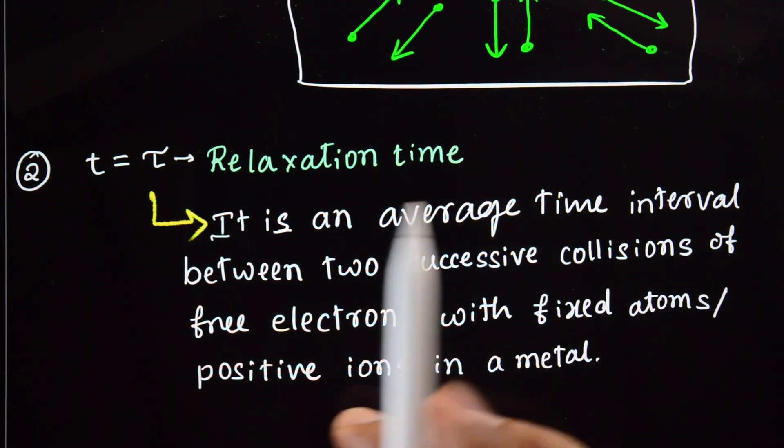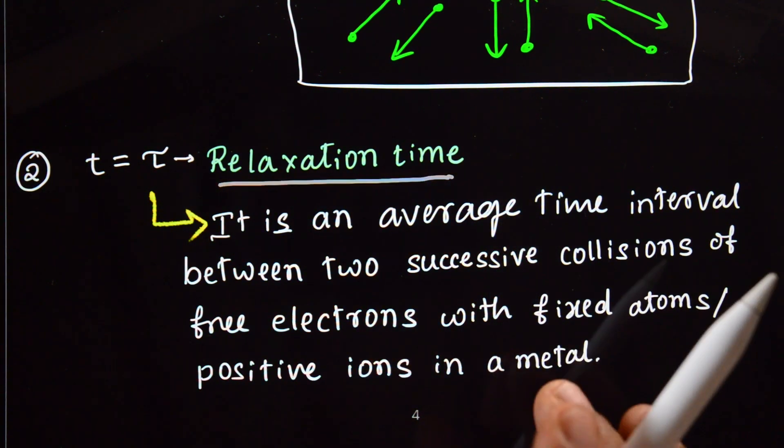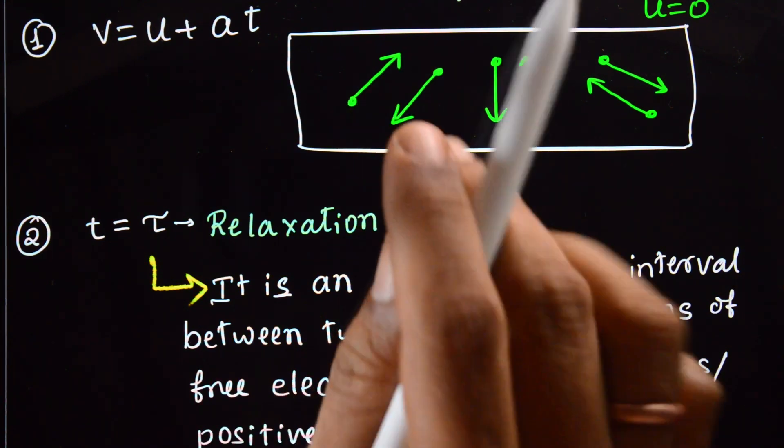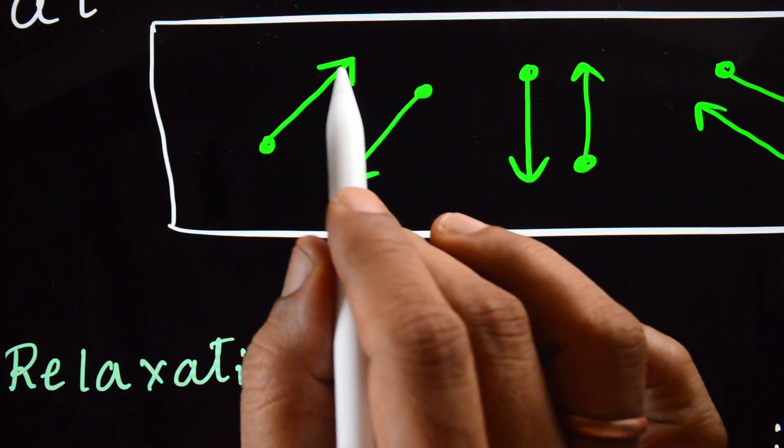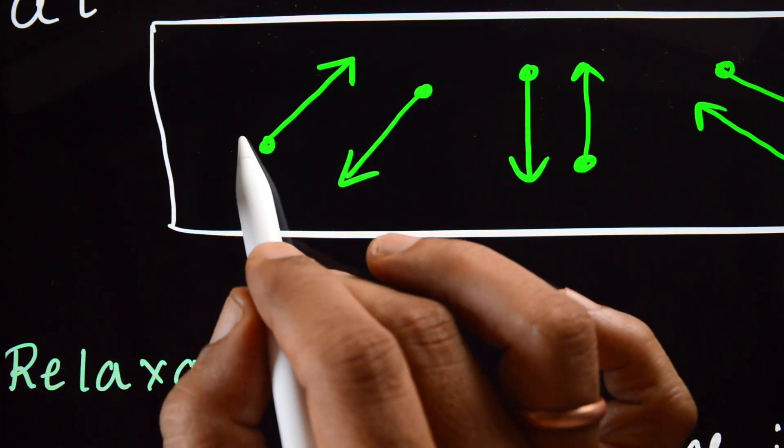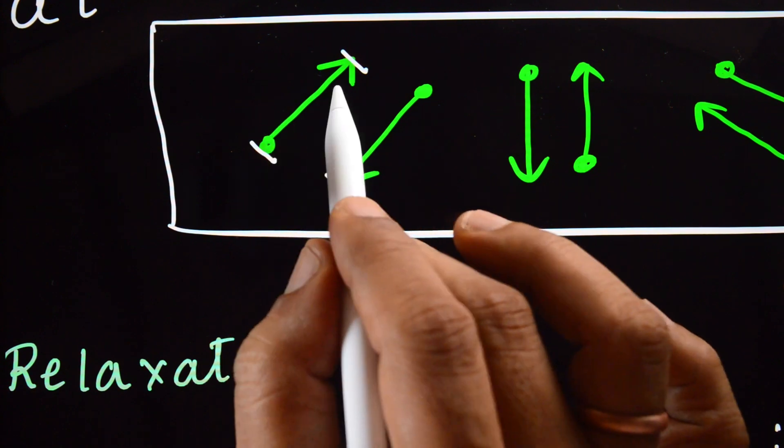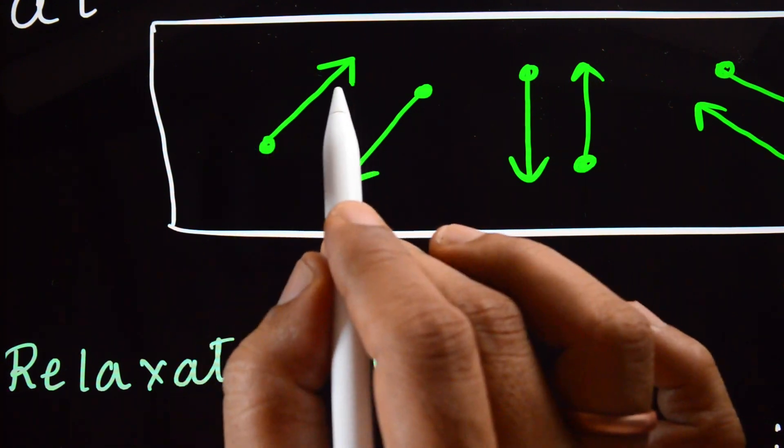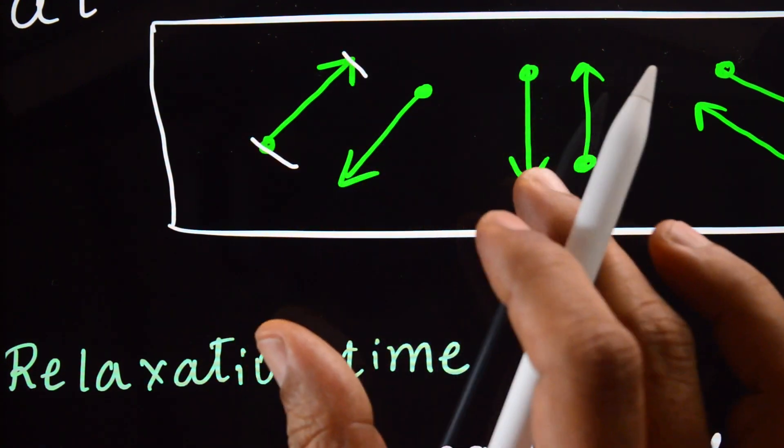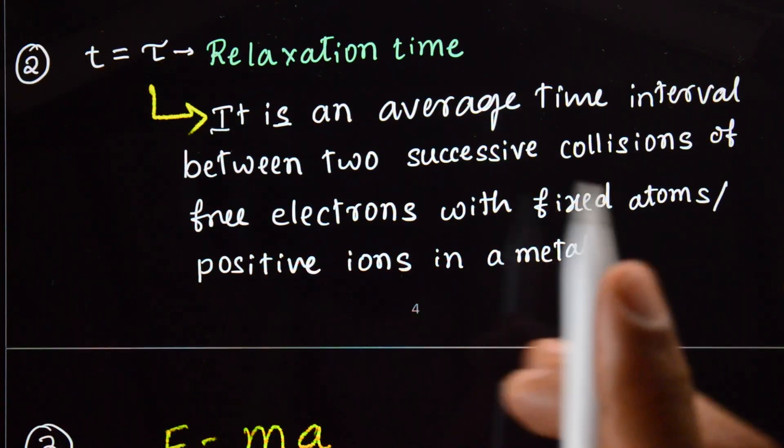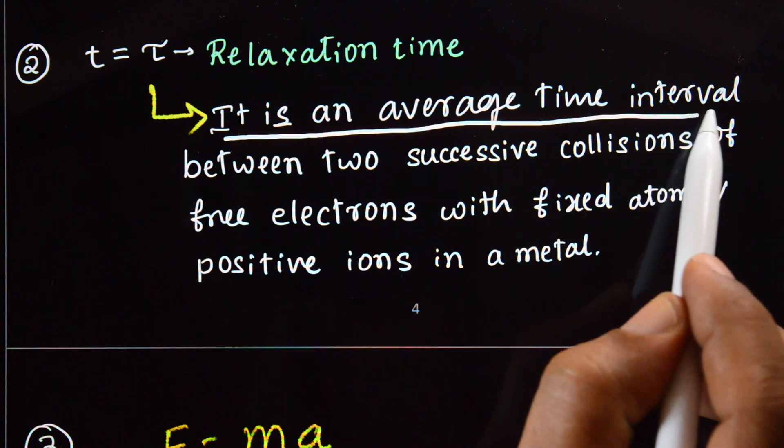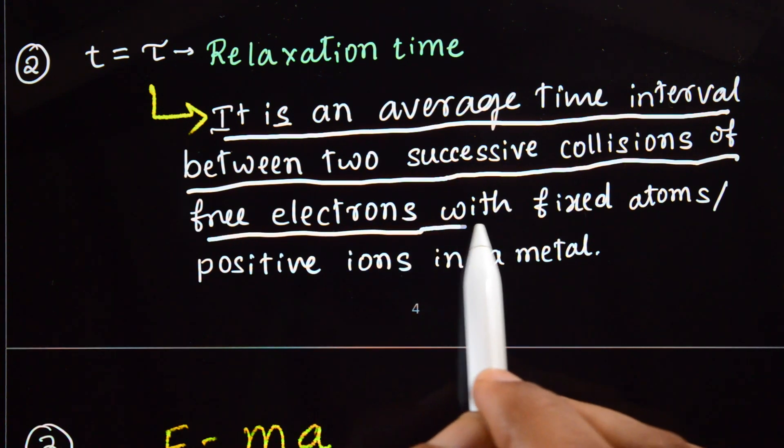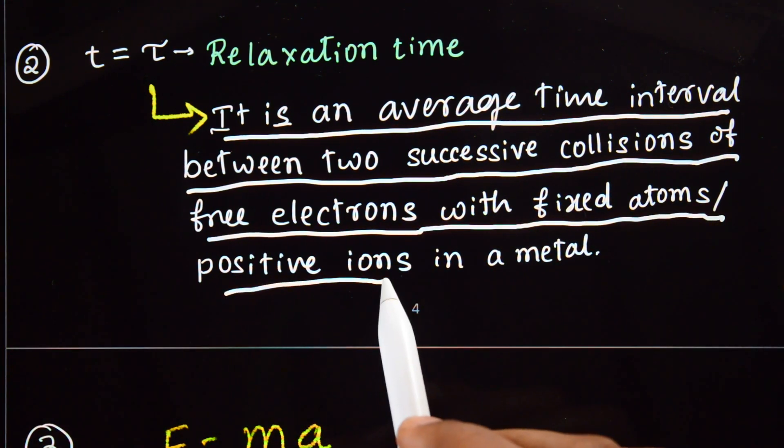Next, relaxation time. You should know about relaxation time. Suppose an electron is moving randomly and collides with an atom or ion, then another collision happens. The time between two successive collisions - relaxation time is the average time interval between two successive collisions of free electrons with the fixed atoms or positive ions.